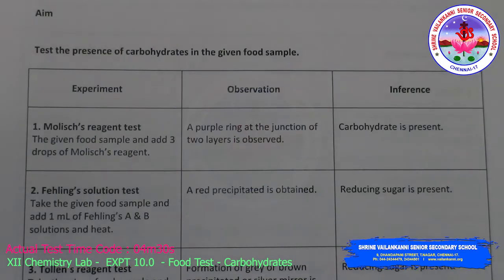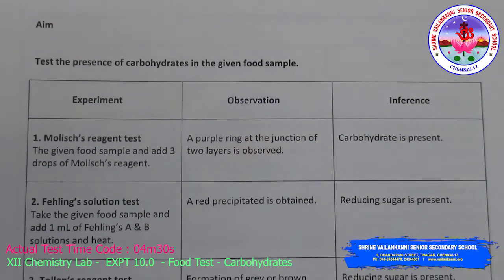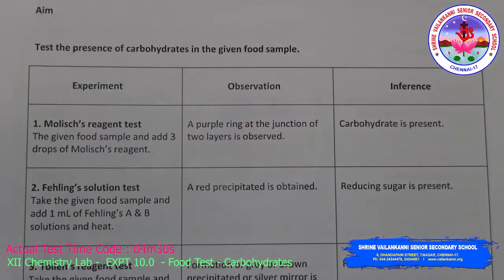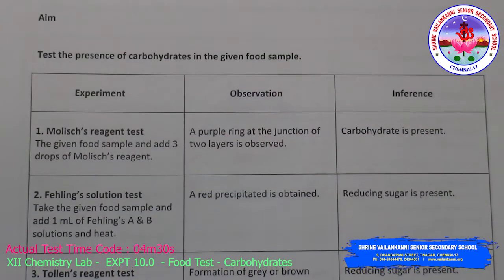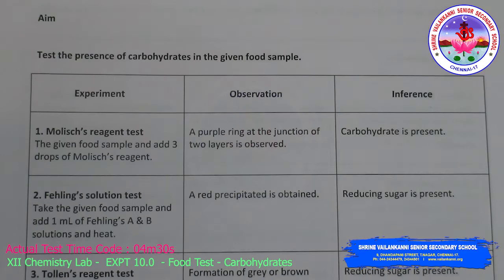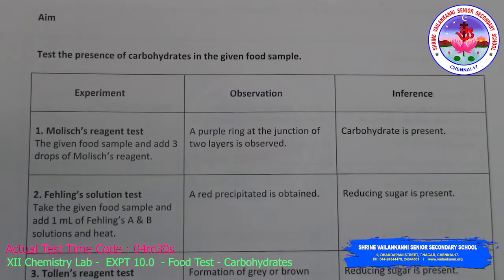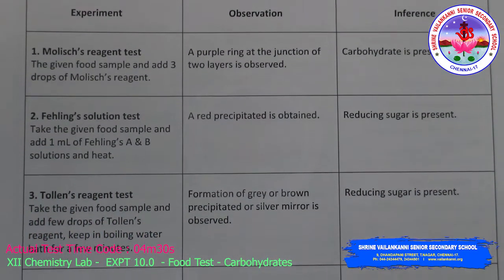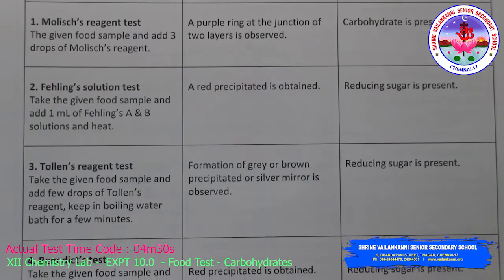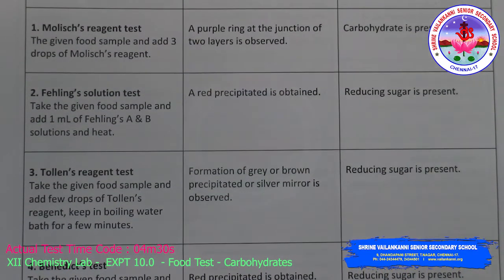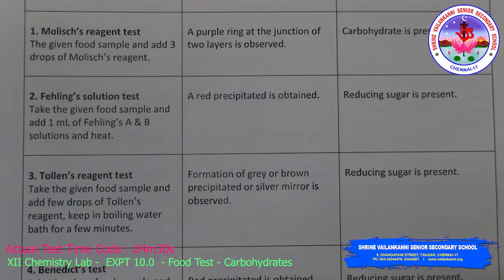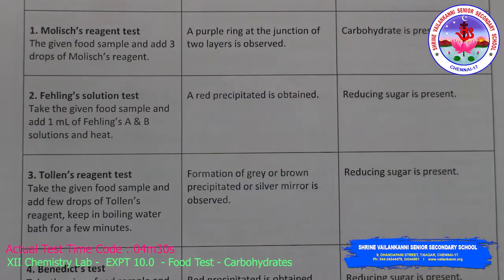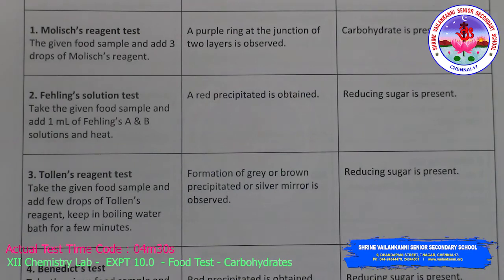The aim of the experiment is to test for carbohydrates — to test the presence of carbohydrate in a given food sample. There are four tests for carbohydrates: Molisch reagent test, Fehling solution test, Tollens reagent test, and Benedict test. In the Molisch reagent test, the given sample is treated with a few drops of Molisch reagent; a purple ring at the junction of the two layers indicates carbohydrates are present.